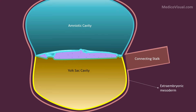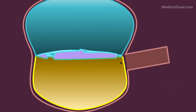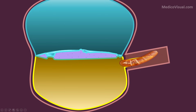At about day 16, an outpouching or diverticulum arises from the yolk sac cavity and goes into the connecting stalk. This sausage-like diverticulum or outpouching is called allantois. That is essentially the development of allantois during the third week of development.